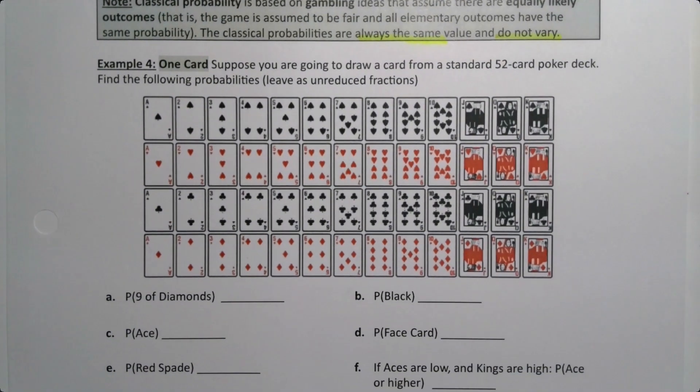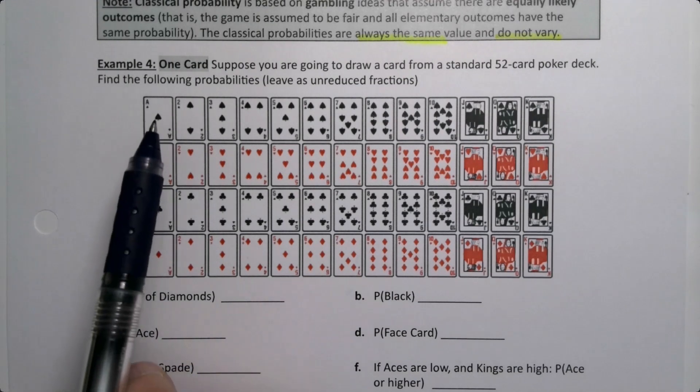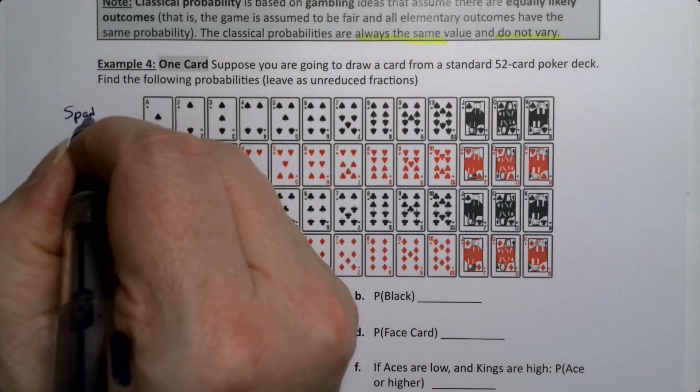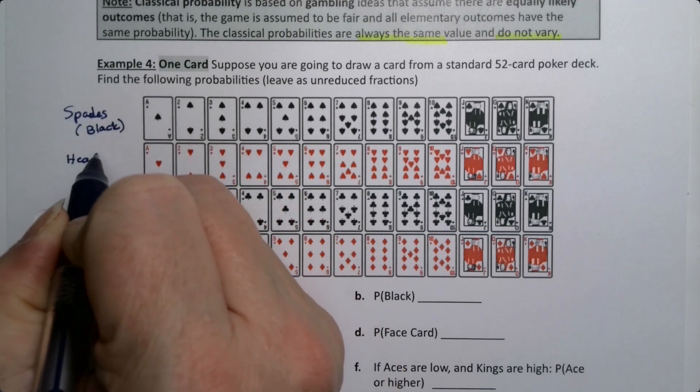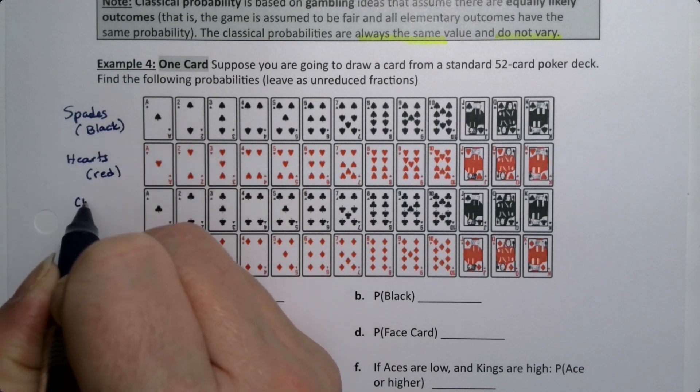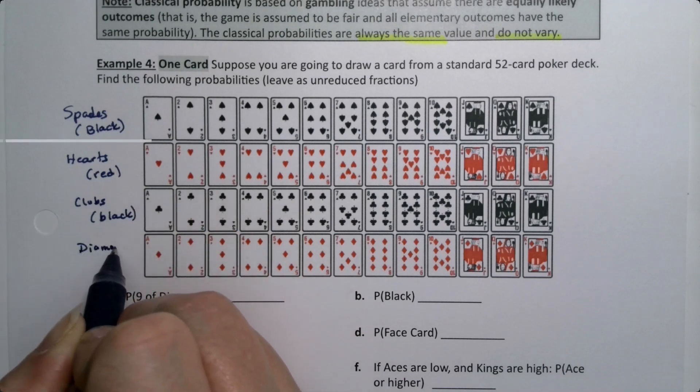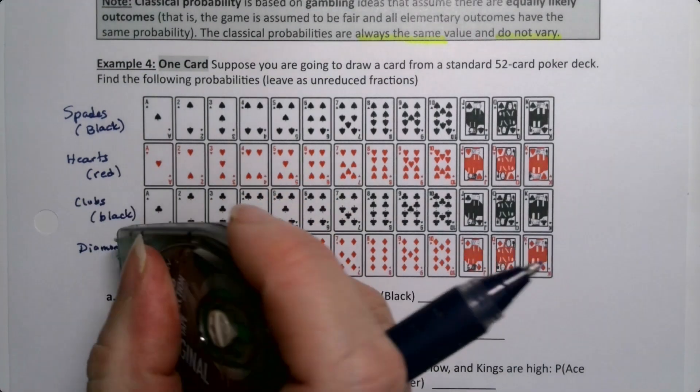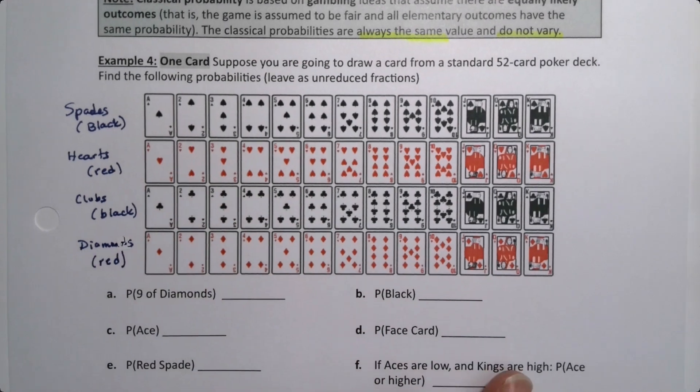Alright, so let's look at one of the classic ways to use classical probability, which is cards. It was actually one of the ways that probabilities were first figured out in the late middle ages, people figuring out how to work with cards. So I know that on your notes, they might not be in color, but these suits: this is spades, which is a black suit, this is hearts, which is a red suit, this is clubs, which is a black suit, and this is diamonds, which is a red suit.